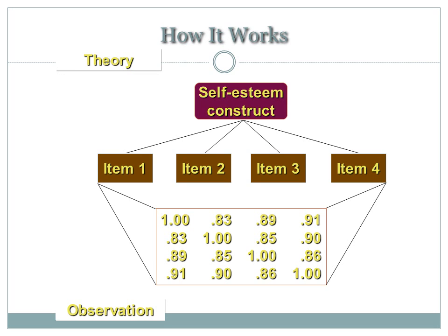Here is a correlation matrix. In a correlation matrix, you're looking at the correlation of each item with every other item. The first row shows the correlation of item one with itself is 1, item two with one is 0.83, three with one is 0.89, four with one is 0.91. In the second row, the correlation of item one with item two is 0.83.